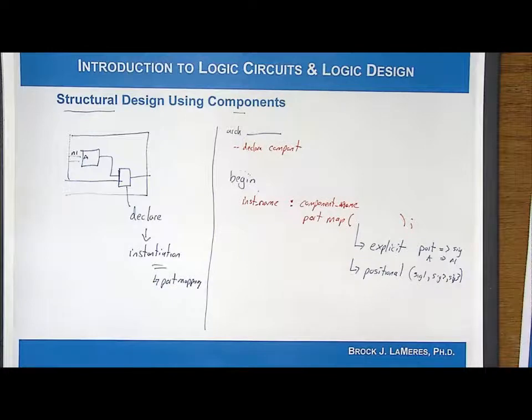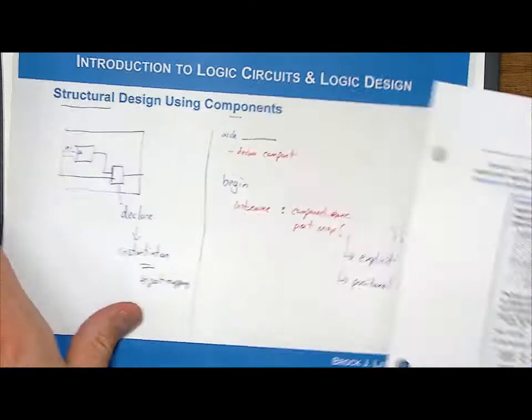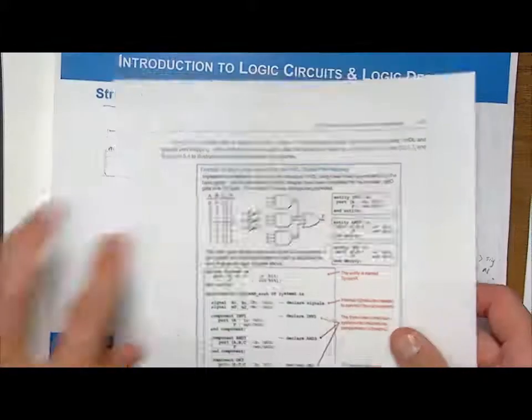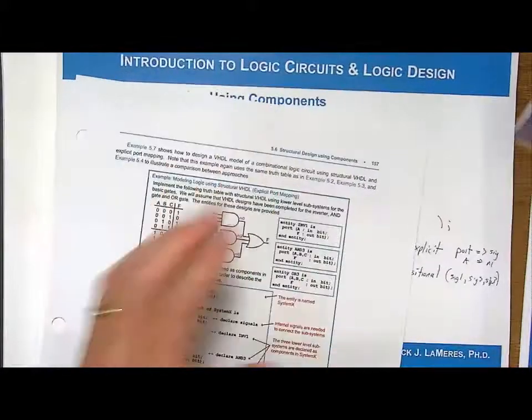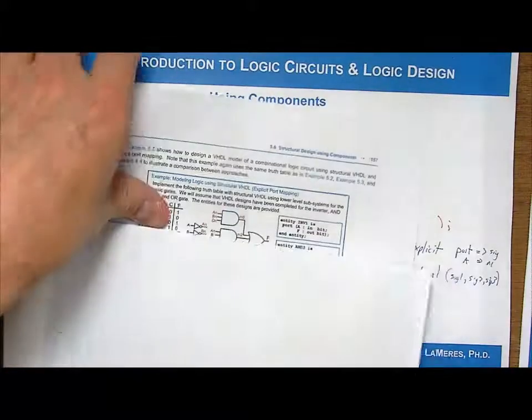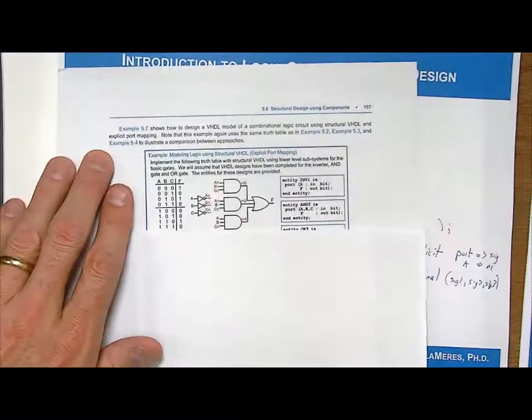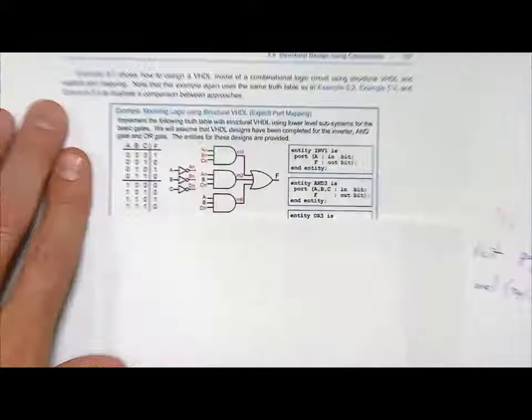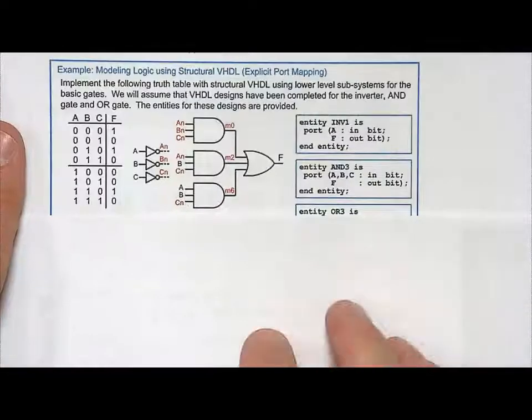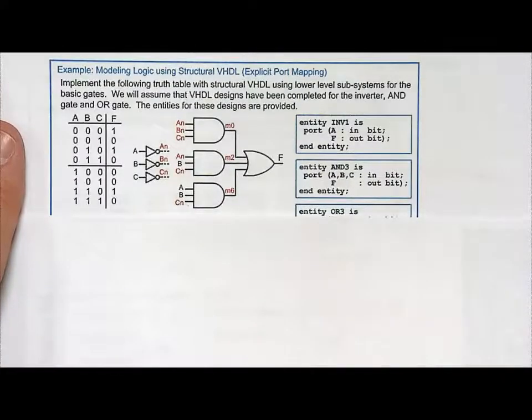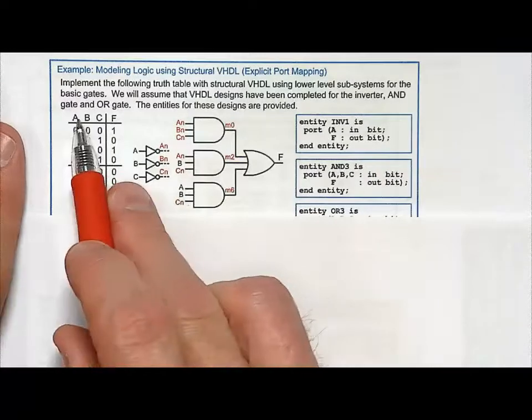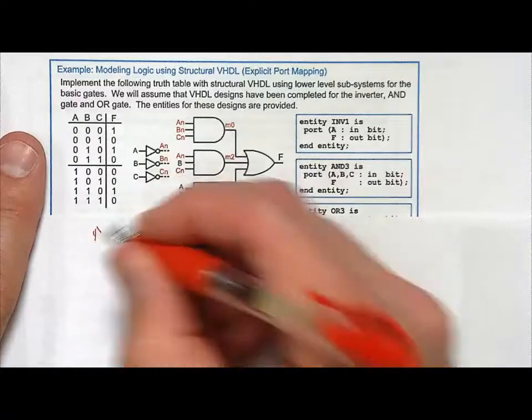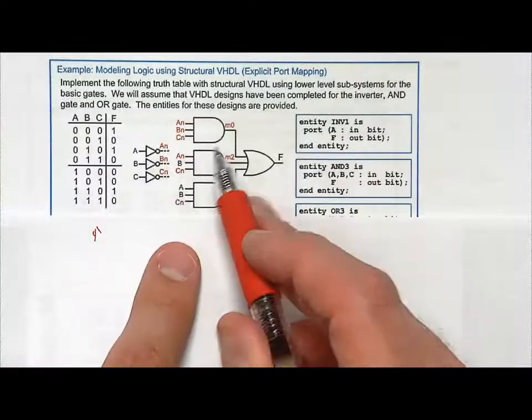So the best way to learn this is to look at an example. So let's just take an example where we're going to build the exact same truth table that we looked at when we did concurrent signal assignments with logical operators, where we looked at conditional signal assignments and selected signal assignments. So let's say we had this truth table, and we are going to build this circuit, so inverters,